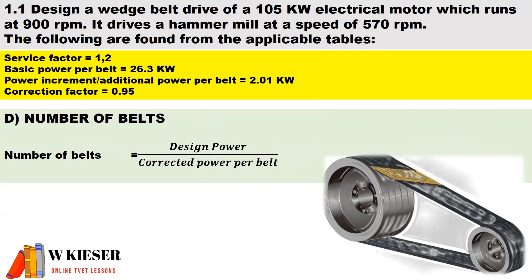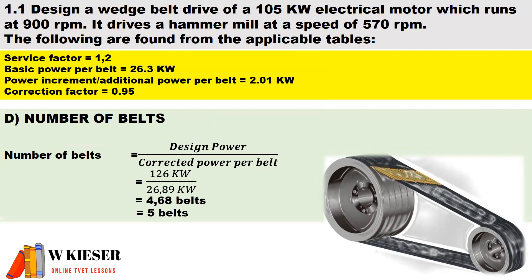In part d, to determine the number of belts, it'll be the design power divided by the corrected power per belt. The design power is 126 kilowatts divided by the corrected power per belt of 26.89 kilowatts. You round the result up to the higher number because you need complete belts — you can't have 4.86 belts — so rounding up it'll be five belts.